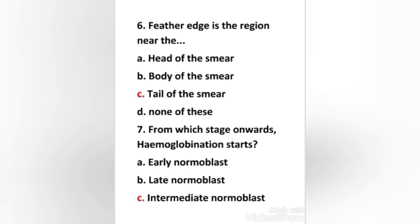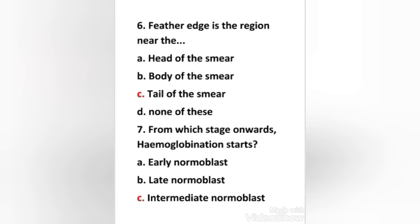Next question: from which stage onwards does hemoglobinization start — early normoblast, late normoblast, or intermediate normoblast? The right answer is option C: intermediate normoblast, also known as polychromatic normoblast. Shape: round or oval, size 8 to 50 micrometers in diameter, nucleus smaller, round or oval, chromatin more condensed, no nucleoli, cytoplasm blue-gray to pink-gray.